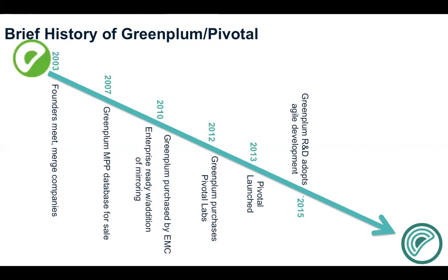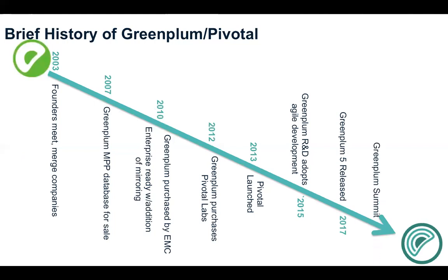The R&D agile development approach also enabled one of the biggest major version releases — Greenplum 5 — last year. This is significant due to the changes made to the codebase, which we'll discuss a little bit later. And in 2018, we had the Greenplum Summit to talk about all of this.